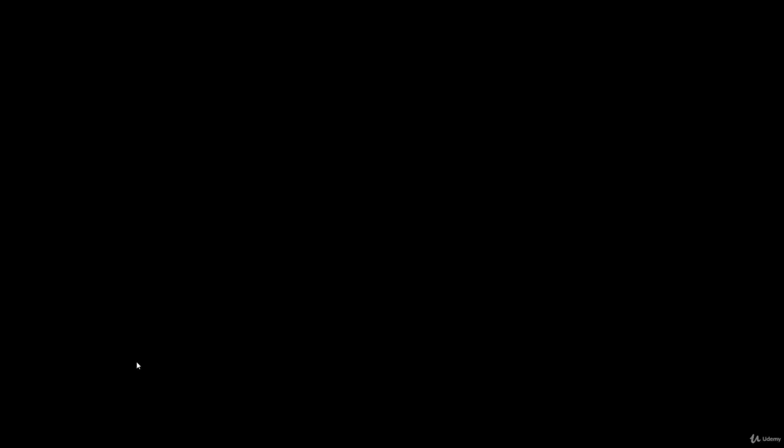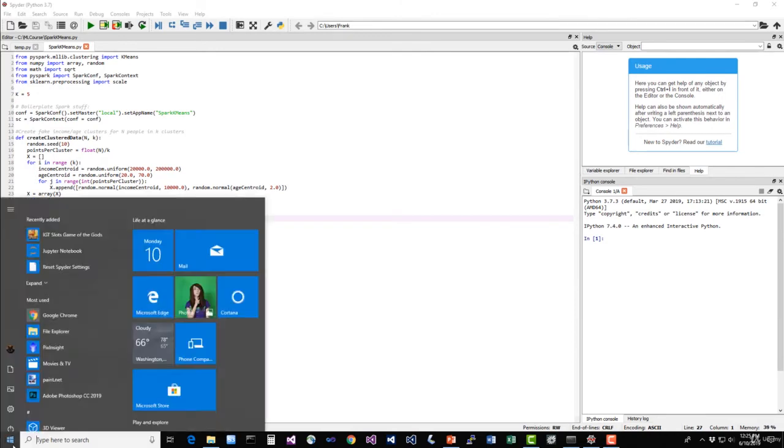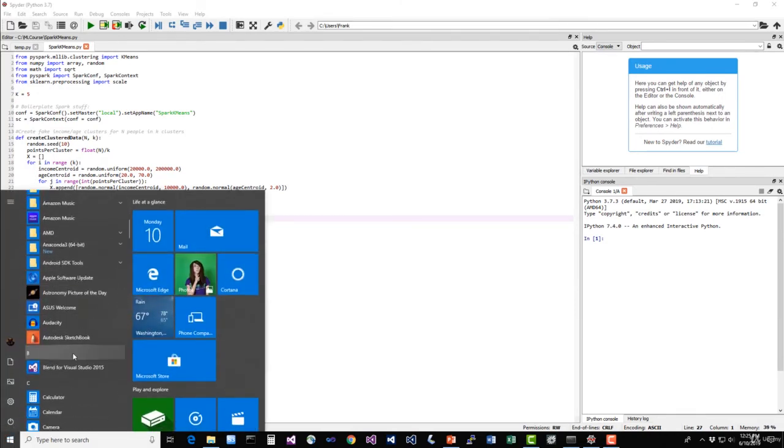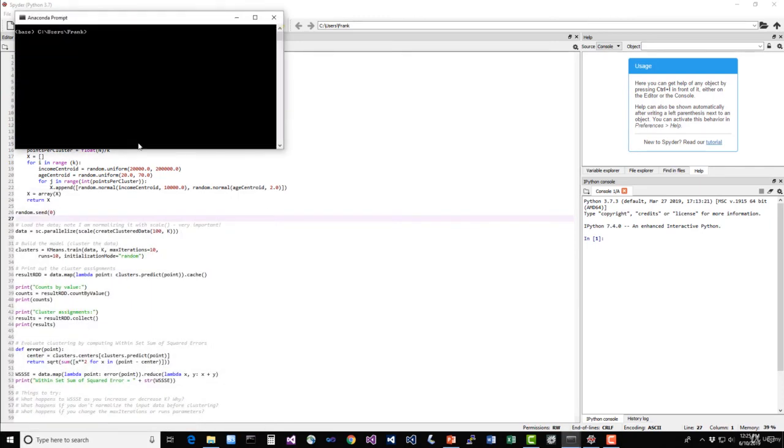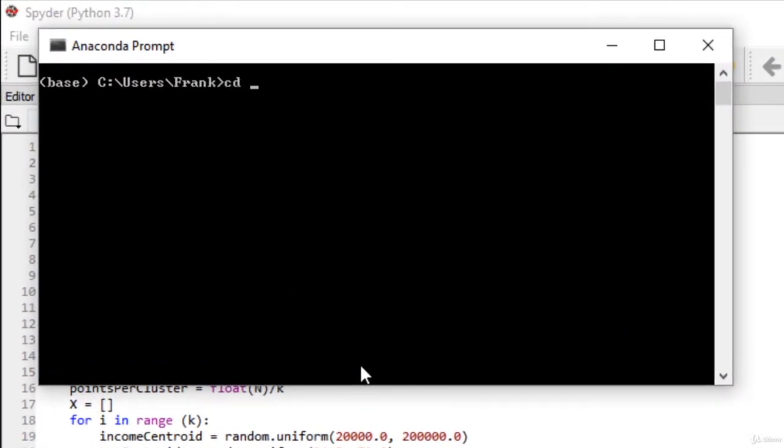So let's go ahead and run it. So as before, we'll open up an anaconda prompt or your terminal on other platforms. We will cd to where our course materials are. And let's type in spark-submit spark-k-means.py and just let that run and see what happens.